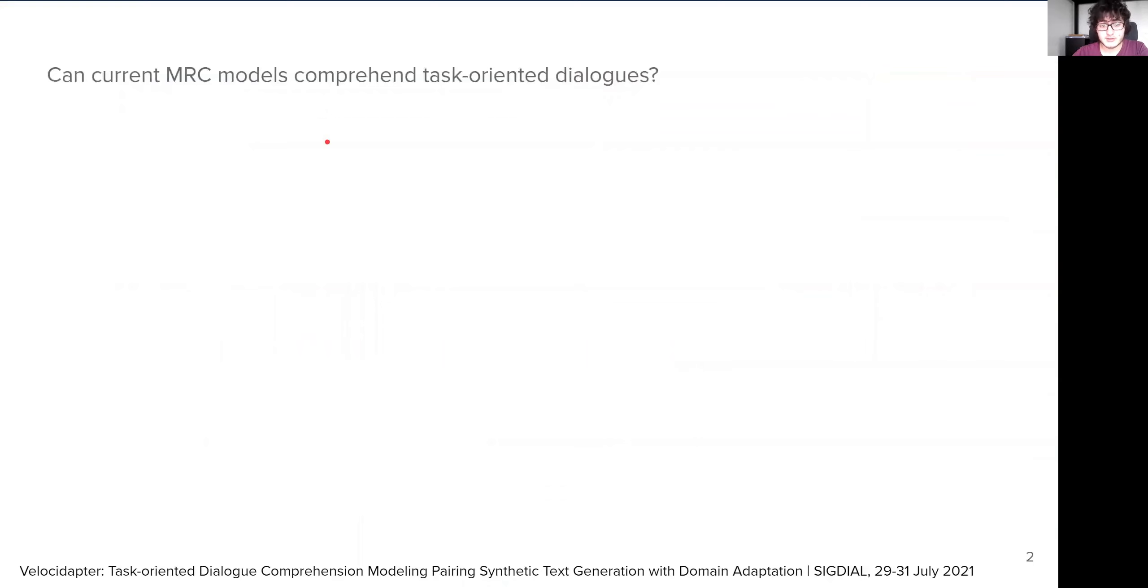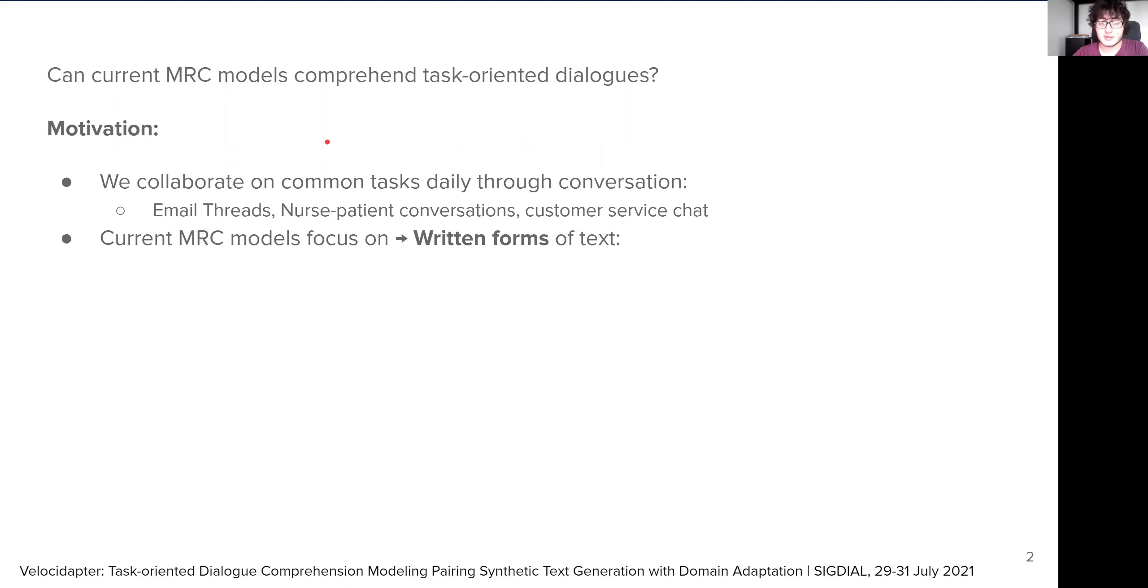The first research question we ask in this study is, can current machine reading comprehension models comprehend task-oriented dialogues? The motivation behind this question is that people converse every day in order to collaborate on tasks, through email threads in work, calls between nurses and patients, and chats for customer service. Thus, comprehending huge information that resides in these conversations is a crucial task.